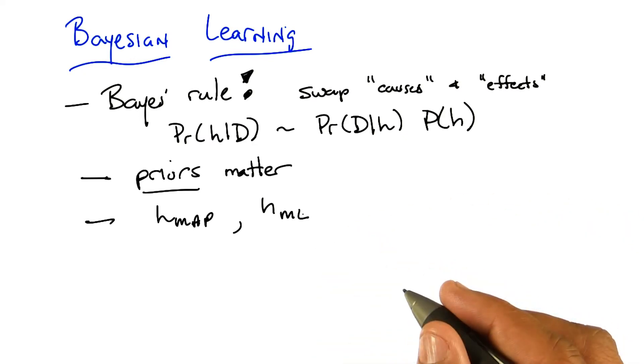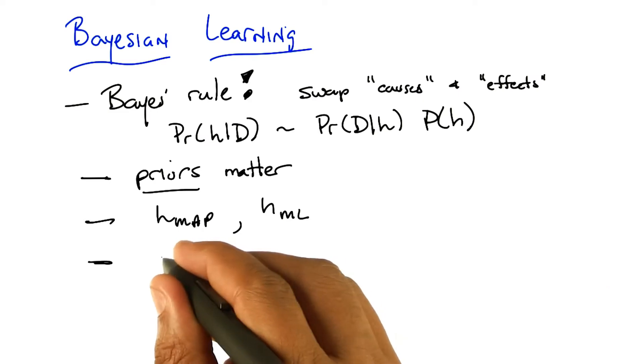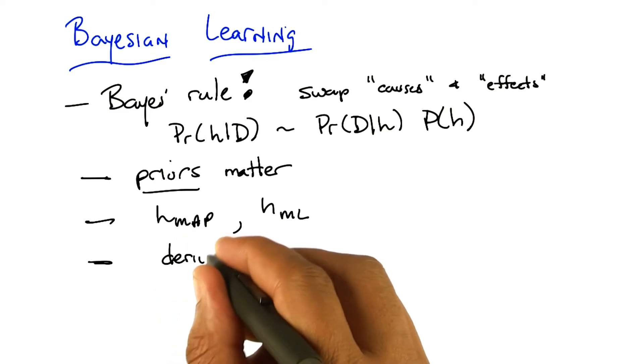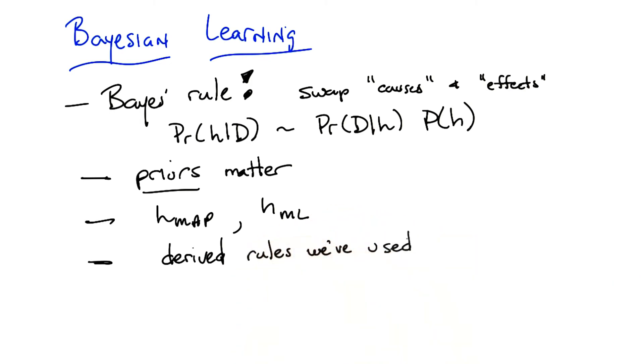Right. All right, and we connected up maximum a posteriori and least squares. Yeah, that was pretty. I really like that. So, we basically, we derived a bunch of things we've been doing before. And sort of showed that there's actually a good argument for them, at least if you're a Bayesian. There are good arguments for doing sum of squared errors.